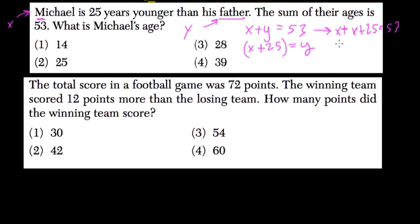So then we add the two x's. It's 2x plus 25 equals 53, and then subtract 25 from both sides, right? And this cancels out, and 2x equals 28.